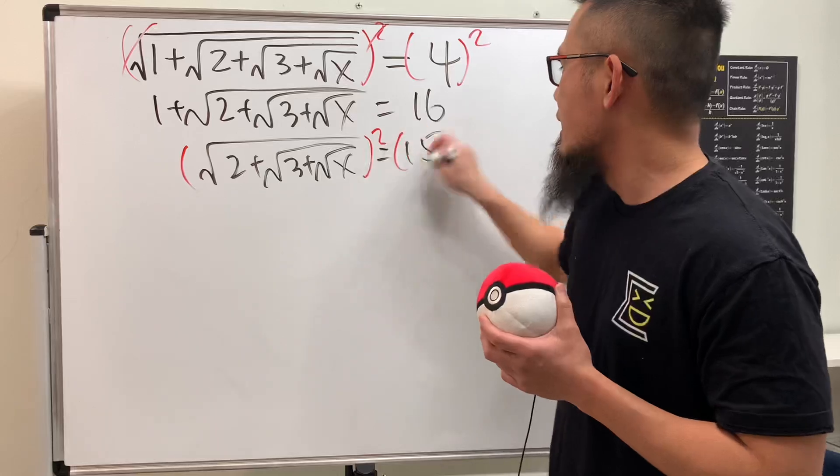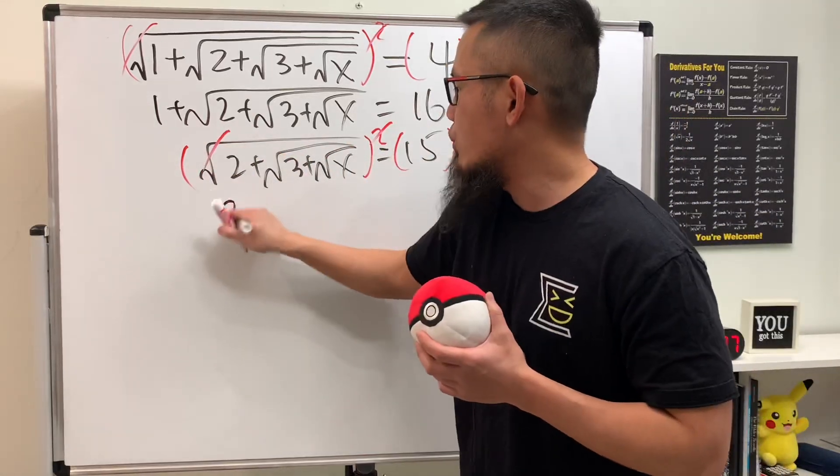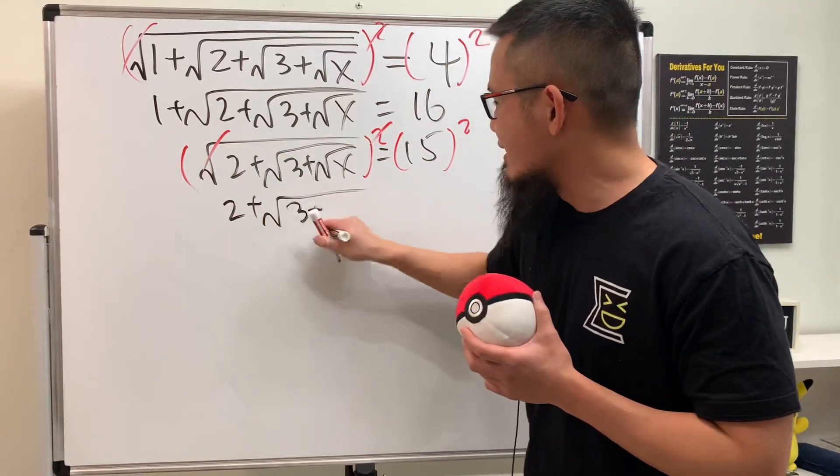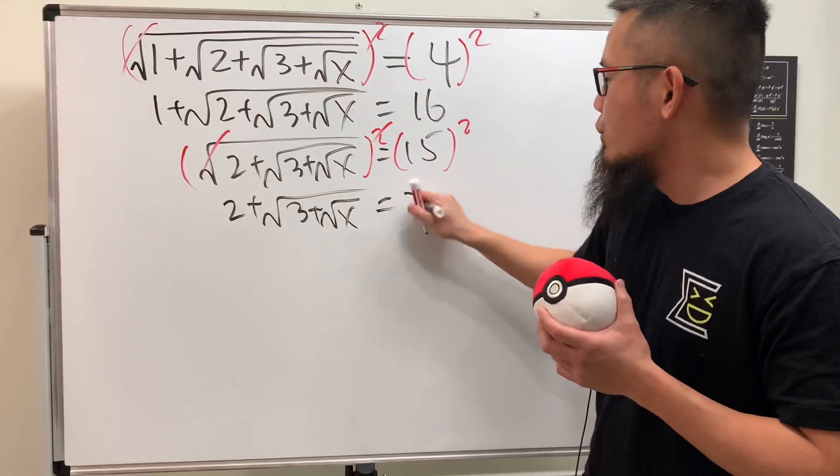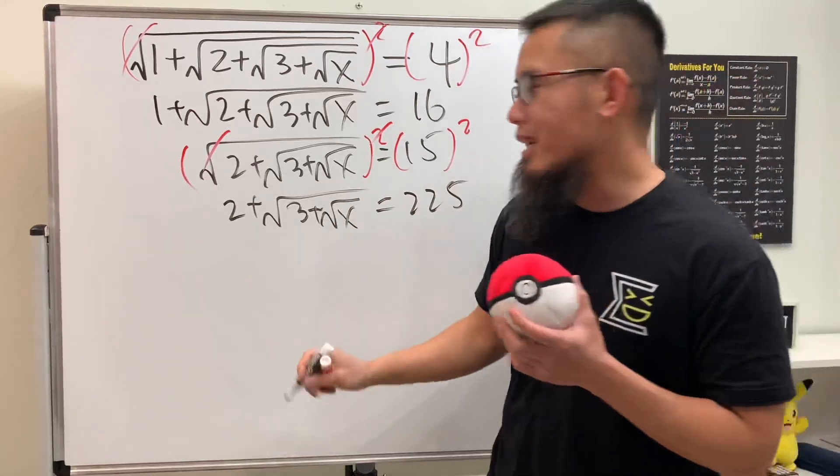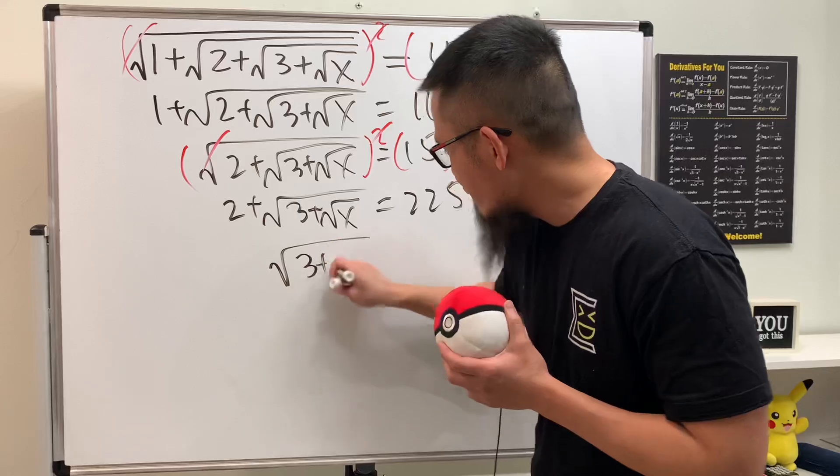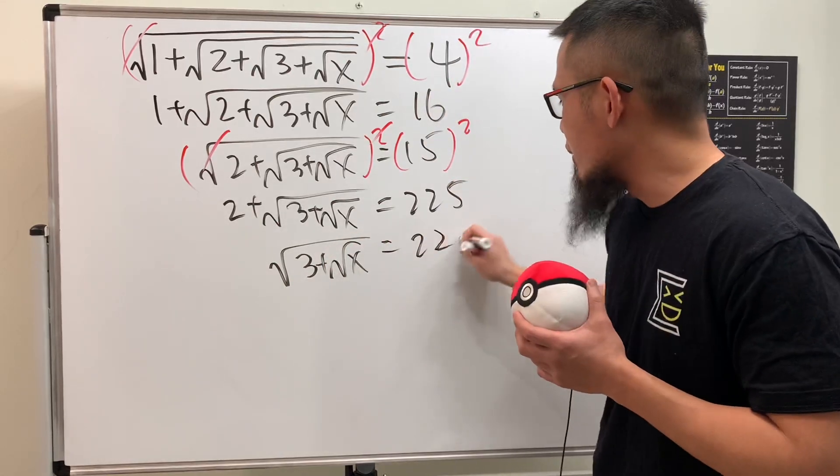we're going to square both sides so we get 2 plus the square root of 3 plus the square root of x, and this is 225. Minus 2 from both sides, so we get square root of 3 plus the square root of x equals 223.